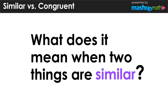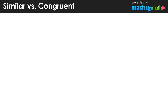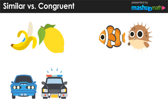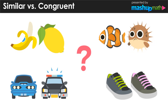Welcome to this lesson where we explore the differences between similar and congruent. Let's start with the question: what does it mean when two things are similar? Looking at some pairs of everyday items, we could describe each pair as similar based on shape, color, species, function, or many other ways. But in geometry, our definition of similar is much more specific.